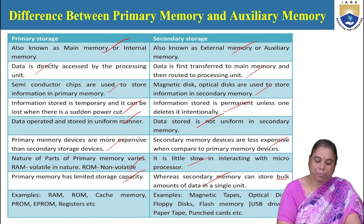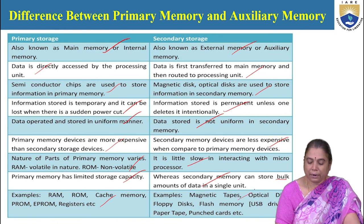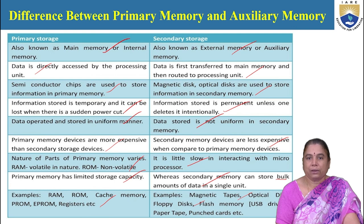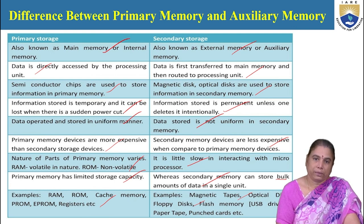Examples of primary memory are RAM, ROM, and cache. Examples of secondary memory are magnetic tape, floppy disk, optical disk, and flash memories — these are the various varieties of secondary storage devices.